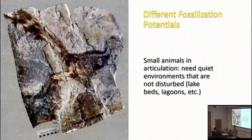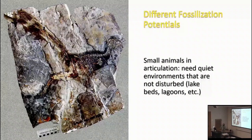In contrast, to get small animals in articulation, you generally don't want high-energy environments because faster-moving water is likely to break them apart. You could get lucky with a small animal sheltered under a bigger animal or a log. But really, the best way we find small animals in articulation is in quiet environments where the bottom isn't disturbed — things like lake beds and lagoons. If the body is relatively intact by the time it settles to the bottom where oxygen levels are low, we have a really good chance of preserving it, like this little troodontid dinosaur.